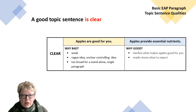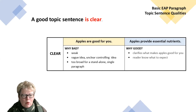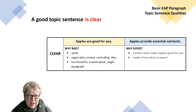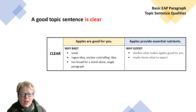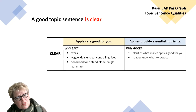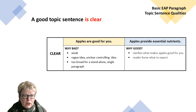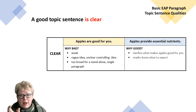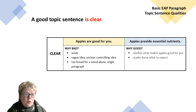A good topic sentence is clear — it's to the point. 'Apples are good for you' is too broad of a subject for a stand-alone paragraph. It's vague. 'Good' — what does it mean? The controlling idea is unclear. Now the sentence on the right in blue, 'Apples provide essential nutrients,' is more specific and clearer. Essential nutrients is a topic you can write about. It clarifies what makes apples good for you, and the reader knows that the paragraph will be about essential nutrients and apples.